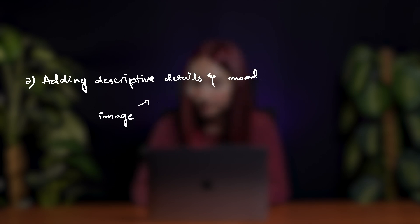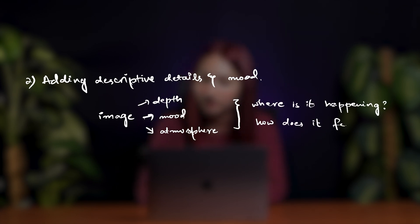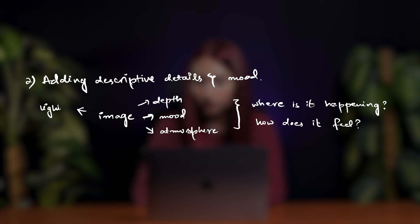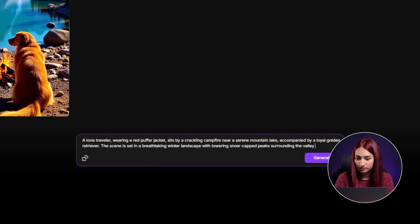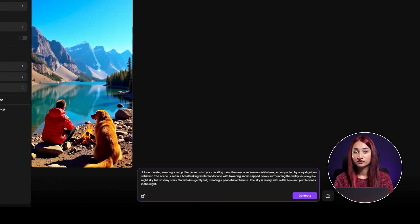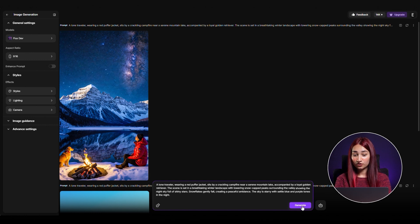For step two, we need to add descriptive details and mood. This is where we bring our image to life by adding depth, mood, and atmosphere. Ask yourself: where is this happening and how does it feel? This is where your prompt goes from good to perfect. To control every aspect of your image, you need to define the lighting, camera angle, and color palette. Let's upgrade our prompt with more details and see what this gives us.